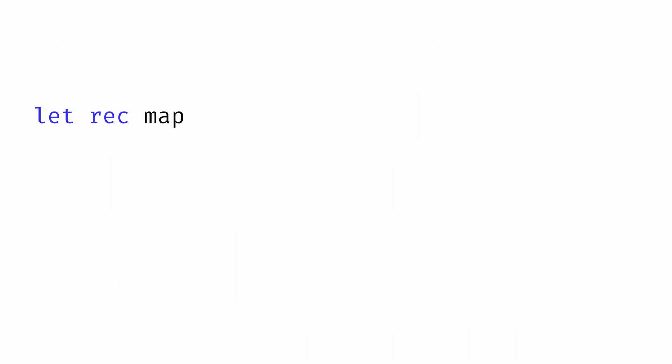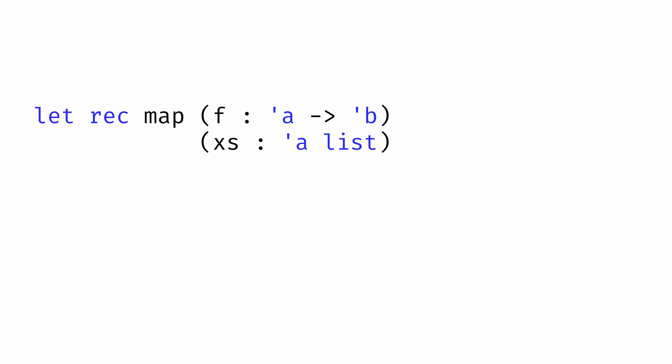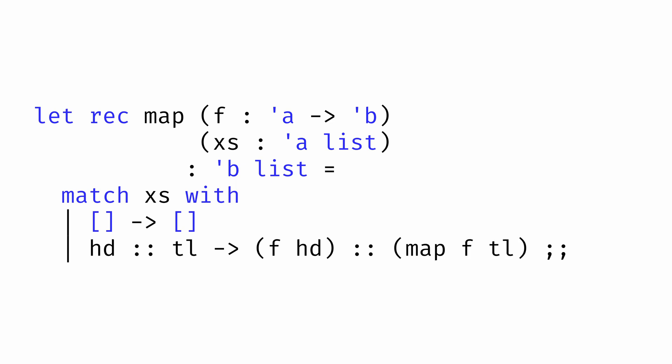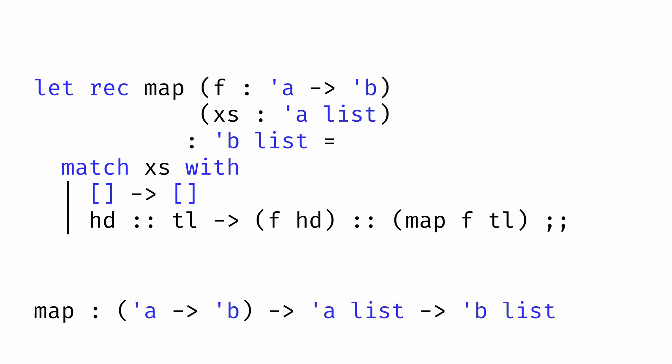Instead, we can write a polymorphic version of this map function. Instead of having the function take an argument f of type int to int, we'll have f be of type alpha to beta. We're using two different type variables, because we want to allow the function we're mapping to potentially map one type to a different type. We might map integers to floats, or floats to pairs of integers, or something else. Our input list will be of type alpha list, where each element is the same type as the input type to the function f. And the function will return a list of type beta list, where each element is the same type as the output type of the function f. And the rest of the map function looks exactly the same as what we've written before. This polymorphic version of the map function has type alpha to beta, to alpha list, to beta list.